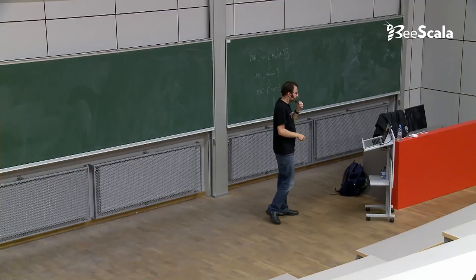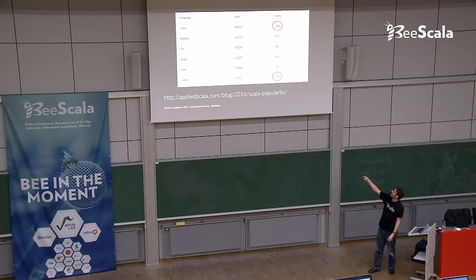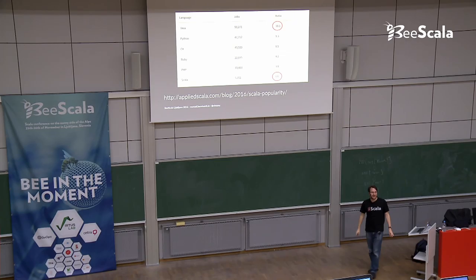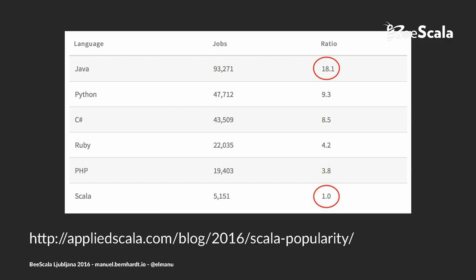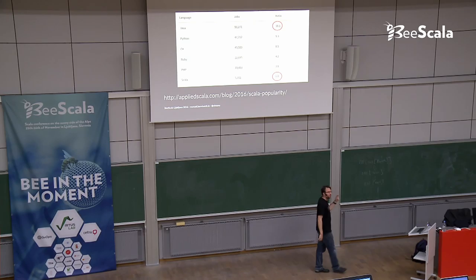And this is already outdated, but there was this blog post on Scala popularity. If you take Scala as one and you compare it, these are job offers, Java is only 18.1 times more popular. So, it's still a niche language, but it's not 100 or 1,000 times less popular than Java. And that's one thing you often hear is like, ah, but it's like 1,000 times, not many people. That's not true. It's only 1 in 18. And that's actually not so bad.